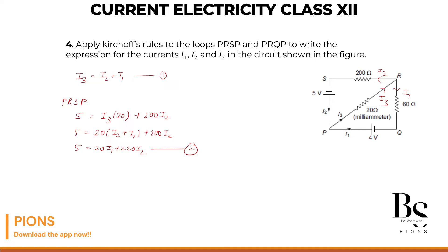Let's consider the lower loop. The lower loop is PRQP. Let's take the loop PRQP. Again, what's the battery voltage? 4 volt. Going from P to R, current is also going from P to R. So what is our P to R resistance? 20 into current I3 plus R to Q, 60 into I1. I hope this is clear.